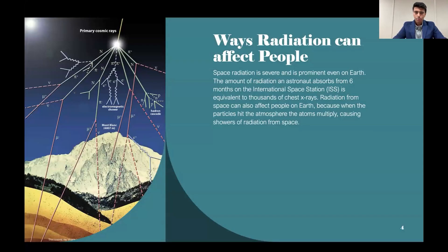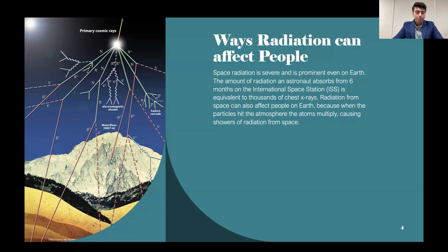Radiation can affect people even on Earth, as we know from solar flares. Even on the International Space Station, the amount of radiation an astronaut absorbs in 6 months is the same as thousands of chest X-rays. When radiation particles pass through the magnetosphere, they will hit other particles in the atmosphere and multiply. On the diagram at the left, we can see how one single particle can multiply into thousands or even ten thousands.